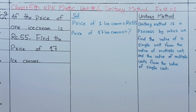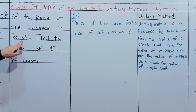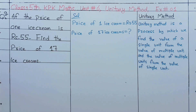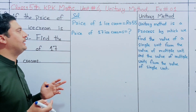The price of 1 ice cream is 55 rupees. Find the price of 17 ice creams. The price of 1 ice cream is 55 rupees. This is a simple question — we multiply to find the price of 17 ice creams.